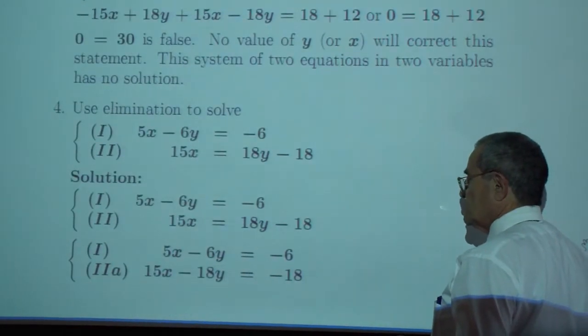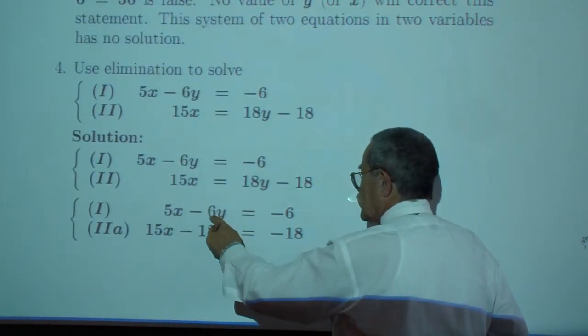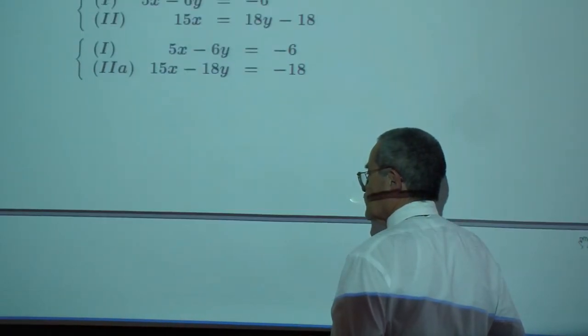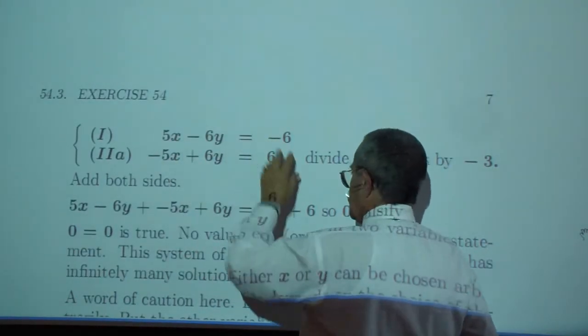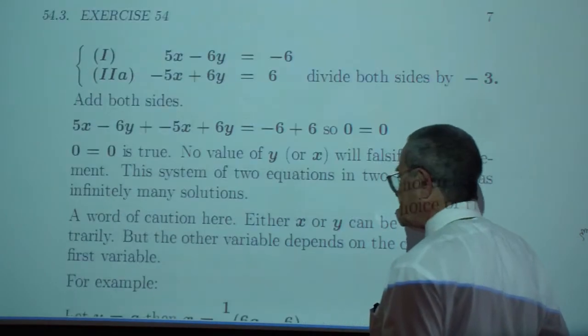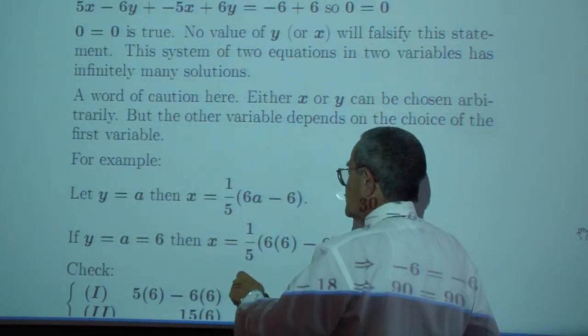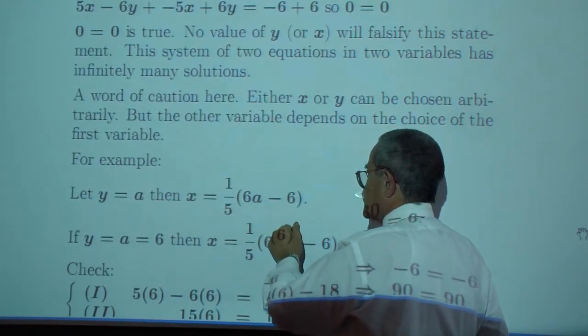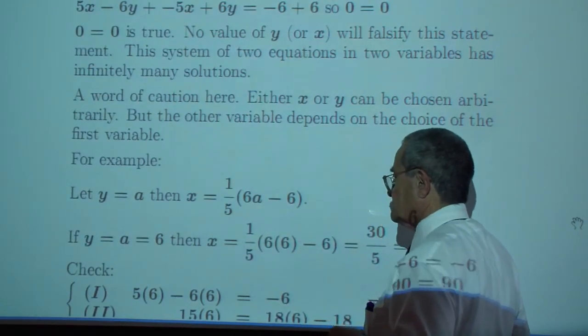Or similarly over here, when you add the equations after you multiply by negative 3, you are going to get 0 equals 0. So there are infinitely many solutions here. Like if y is a, then x is 1 over 5 times the quantity 6a minus 6. I could have factored out the 6. That's it.